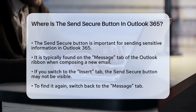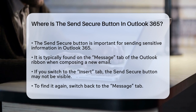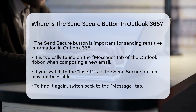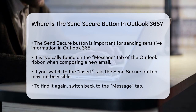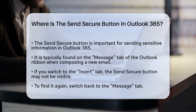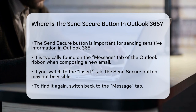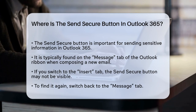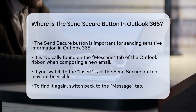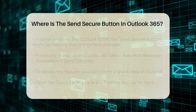First, let's talk about the normal spot for this button. Typically, the Send Secure button is located on the Message tab of the Outlook ribbon when you're composing a new email. However, if you've switched to the Insert tab while adding attachments or other elements, you might not see it. Simply switch back to the Message tab and the Send Secure button should reappear.